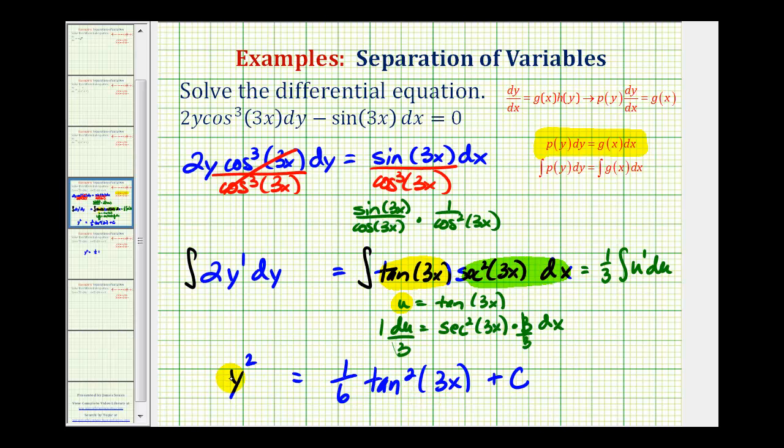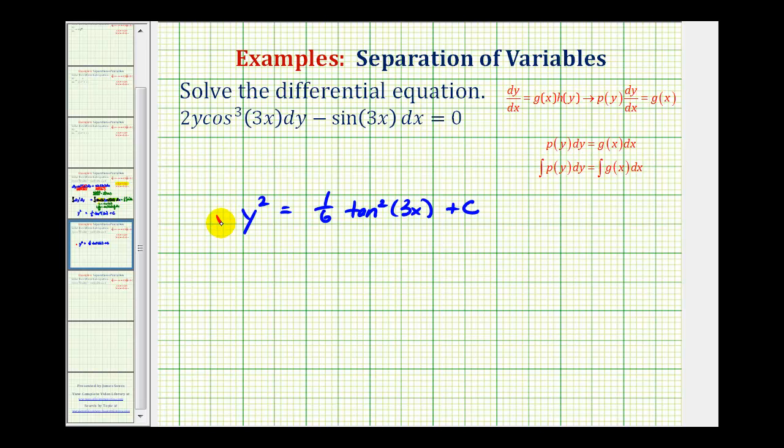And our last step here is going to be to take the square root of both sides of the equation. Let's do that on the next slide. And again, because we have y squared here, we know y can be positive or negative. So that leaves us with y equals plus or minus the square root of 1 sixth tangent squared 3x plus our constant of integration.